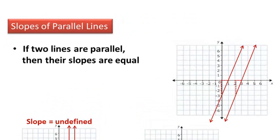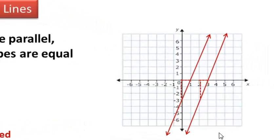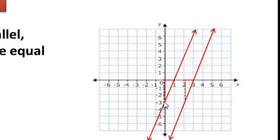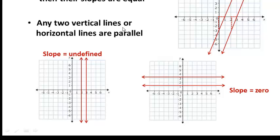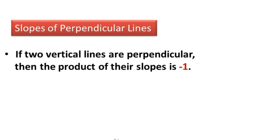First, we're going to talk about slopes of parallel lines. If two lines are parallel, their slopes are equal. Looking at this graph, we have two parallel lines. Using rise over run, this one goes up three over one, so it has a slope of three. The other one also goes up three over one, giving a slope of three as well. Any two vertical or horizontal lines are always parallel.